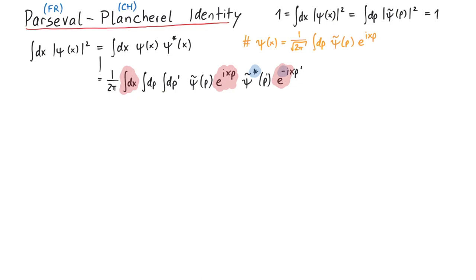Since psi tilde depends on p and p', the only terms that have an x are the exponential functions. An integral over exponential functions like this can be turned into a delta function. Since this absorbs 1 over 2 pi, what remains are the integrals over p and p', psi tilde and its conjugate, as well as a delta function.